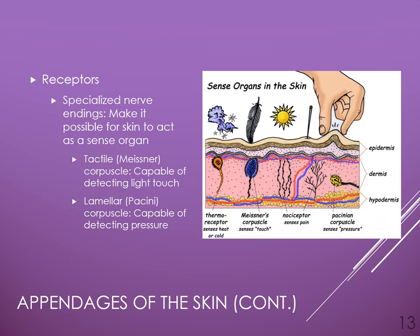The skin contains several structures called receptors, responsible for helping us sense our environment. Each receptor is designed to sense a specific type of sensory input — some sense heat, others cold, some sense stretch, pressure, vibration, and others sense pain. The book talks about two types: the Meissner corpuscle, responsible for detecting light pressure or light touch, lying just underneath the epidermal layer, and the Pacinian corpuscle, responsible for sensing deeper pressure, lying deeper within the dermal layer.